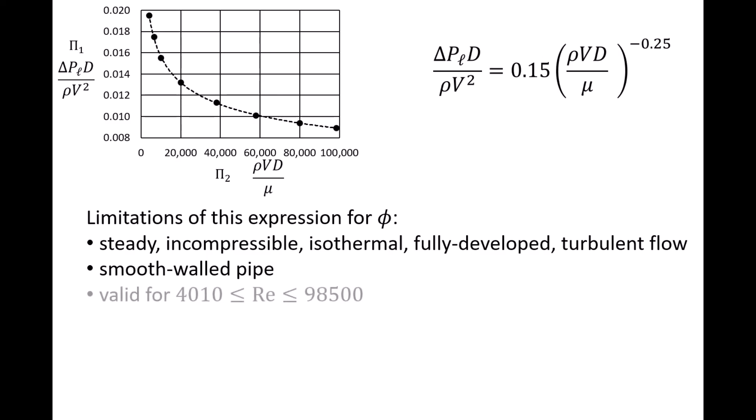Additionally, we only varied the Reynolds number between 4010 and 98,500. The expression for phi may not be accurate outside this range of Reynolds numbers. If a pipe experiences flow conditions with a Reynolds number greater than 98,500, the pi 1 group may continue to decrease according to the power-law expression we obtained, or it may change suddenly. We simply don't know for sure without experimental data at higher Reynolds number values.